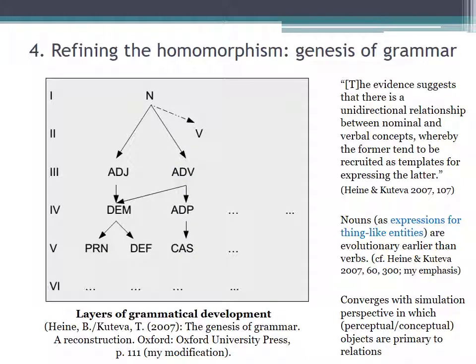Is there further evidence for the primary status of objects and the secondary status of relations? Now, Heine and Kuteva have attempted an evolutionary reconstruction of language by, firstly, surveying typologically stable grammaticalization paths, and then running them backwards. In doing so, they arrived at different layers of development, with a category N, for noun, being the oldest layer, only then emerging verbs. And this converges nicely with the primacy of perceptual objects in an embodied-simulative semantics, and the utterance-as-instruction idea presented.